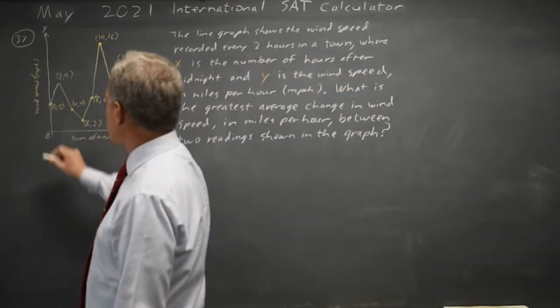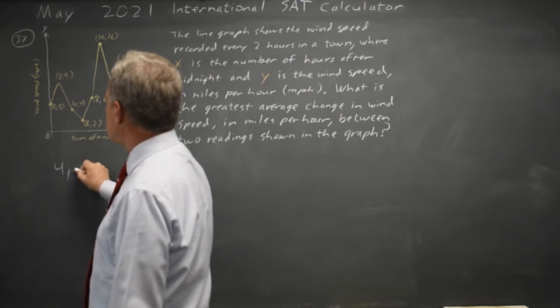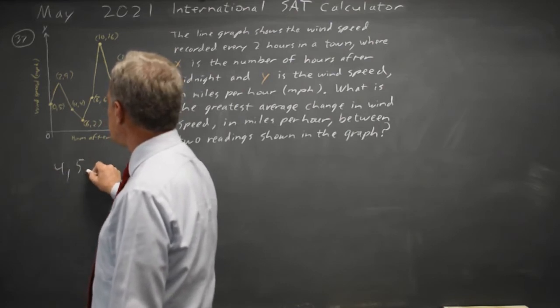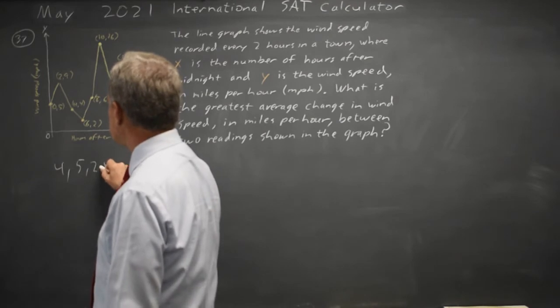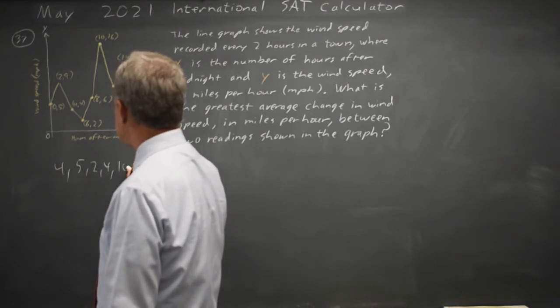So let's look at the changes. We go from 5 to 9, that's 4. 9 to 4 is a change of 5. 4 to 2 is a change of 2. 2 to 6 is a change of 4. 6 to 16 we change by 10.